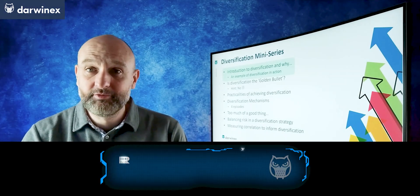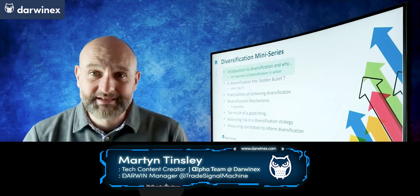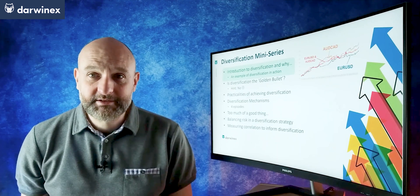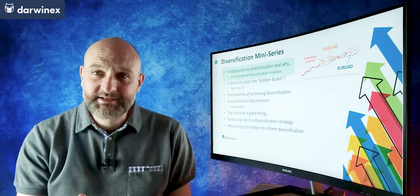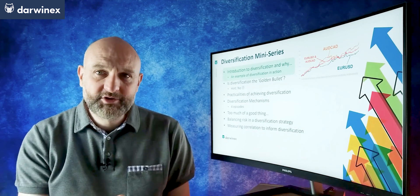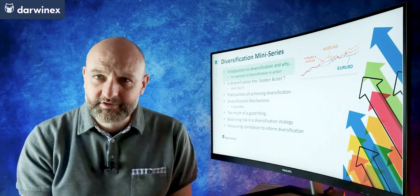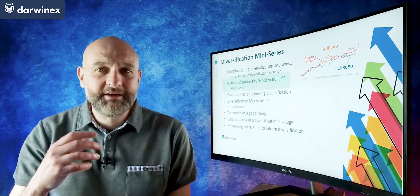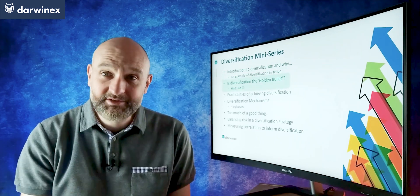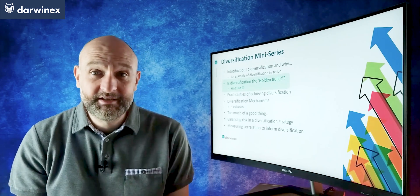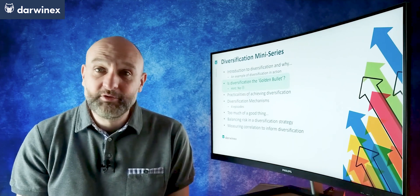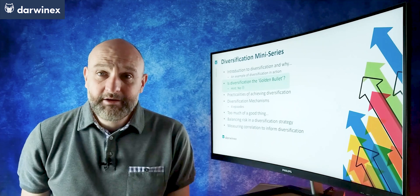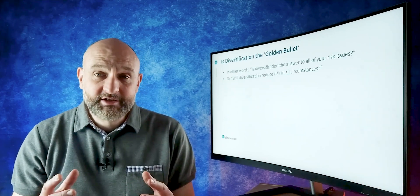Last time we looked at some of the reasons why traders choose to implement diversification strategies into their trading routines, and then we went on to look at an example — a very simple example that traded two assets as part of a mini portfolio, as opposed to trading them separately, and took a look at the difference, especially in terms of risk metrics. But this time we tackle the question of whether diversification is the golden bullet and the answer to all of the risk management issues that we face. Today we're going to look at some examples of why that's not the case, and see what we can do to increase the effectiveness of diversification.